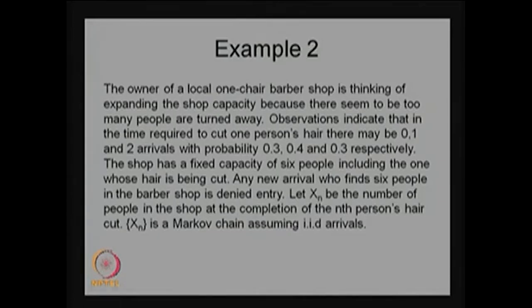Now I am going to define the random variable. Let Xn be the number of people in the shop at the completion of the nth person's haircut. This is a very different stochastic process — usually the parameter space is time, but here the parameter space is the nth person who leaves after the haircut. The random variable is how many people are in the system when the nth person leaves, and you should not count that person when finding Xn. This number is counted at the departure time point, and the maximum will be 5 when he leaves.